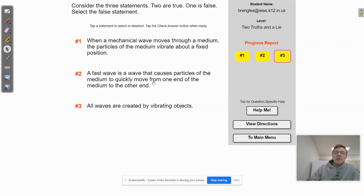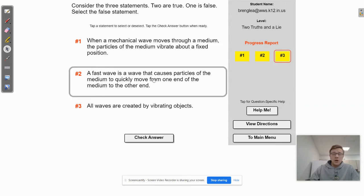So having said that, this number one is true. The particles of the medium vibrate around a fixed position. And number two is false. A fast wave is a wave that causes particles to move quickly from one end of the medium to the other.